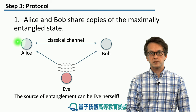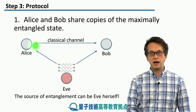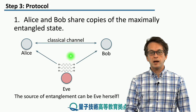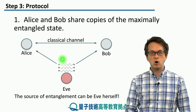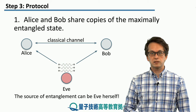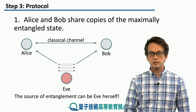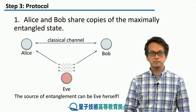The setting is the following: Alice and Bob can communicate over a classical channel, and they share multiple copies of a maximally entangled state. These copies can be generated by Eve herself.